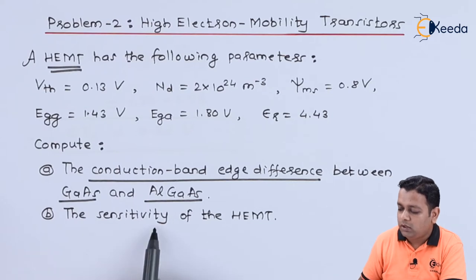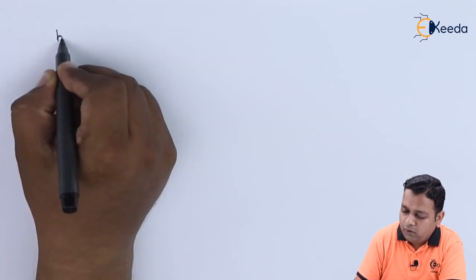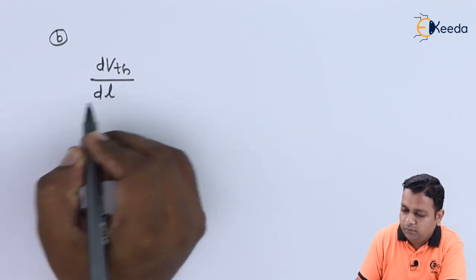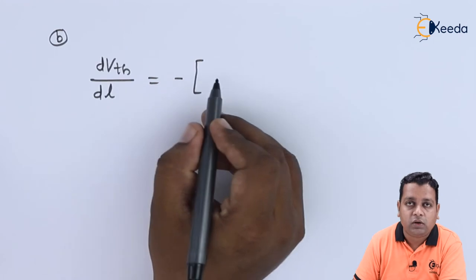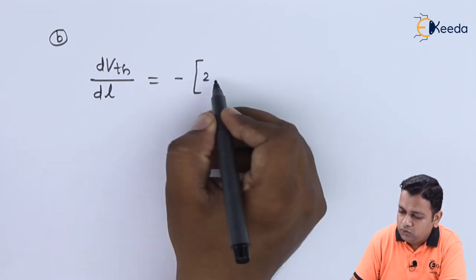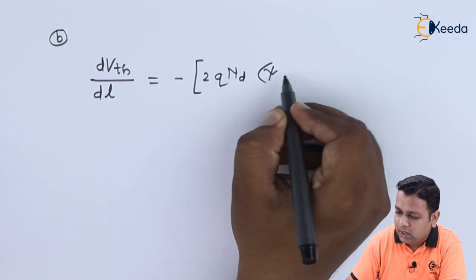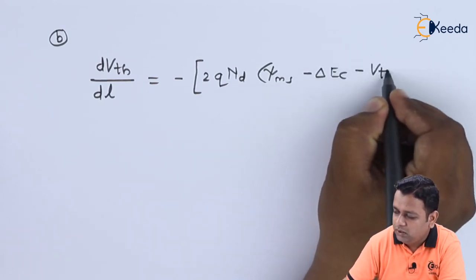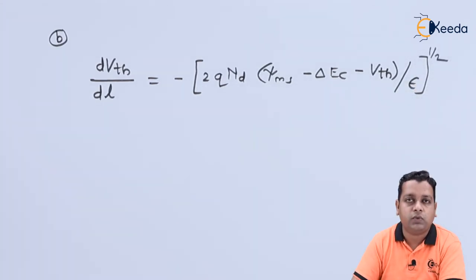After determination of the conduction band edge difference, we need to determine the sensitivity of the device. The sensitivity is denoted by a ratio: dVth/dL. For part B, it can be computed by the formulation: minus square root of [2 Q ND (psi_MS - delta EC - Vth)] divided by epsilon.